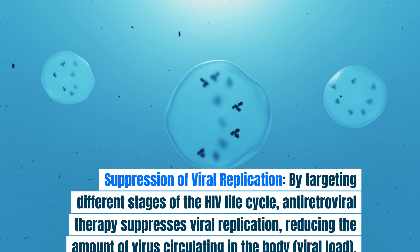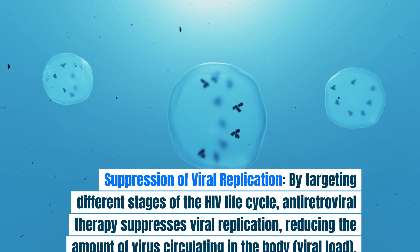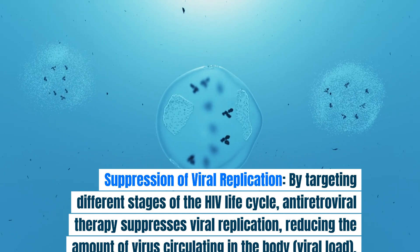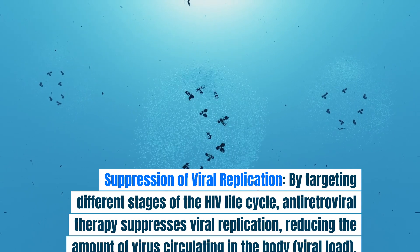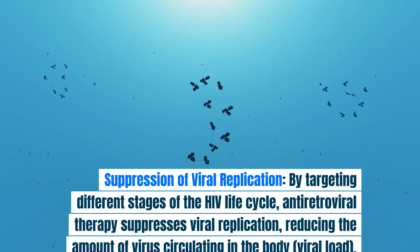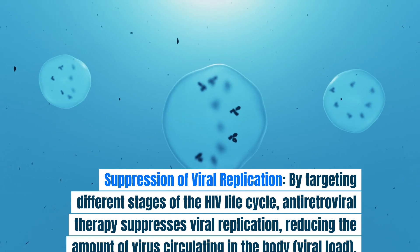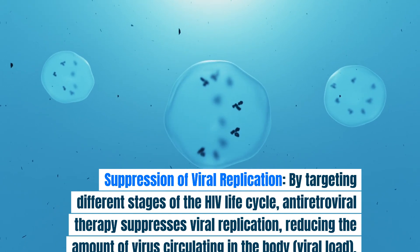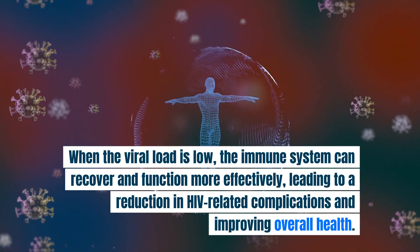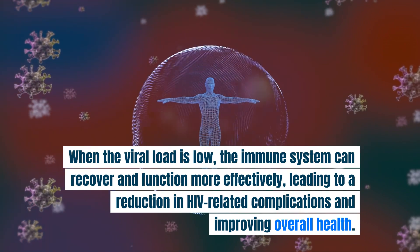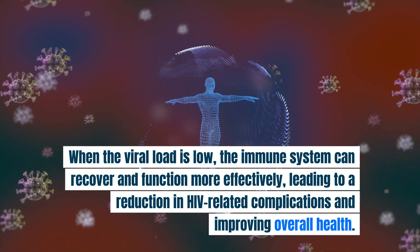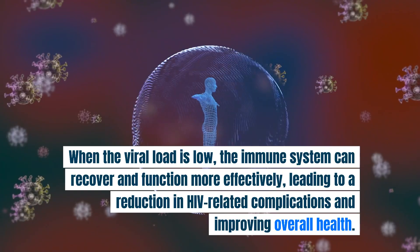Suppression of viral replication: By targeting different stages of the HIV life cycle, antiretroviral therapy suppresses viral replication, reducing the amount of virus circulating in the body. When the viral load is low, the immune system can recover and function more effectively, leading to a reduction in HIV-related complications and improving overall health.